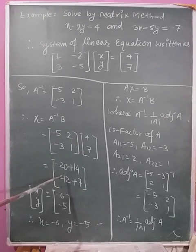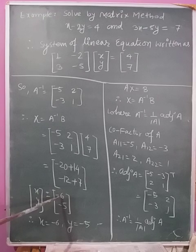Simplifying we have -6, -5 which is equal to X, and X is variables x and y. So x = -6, y = -5, which is the required solution of the given system of linear equations.